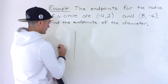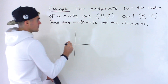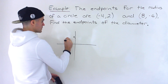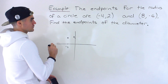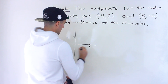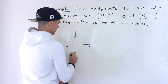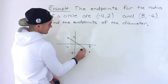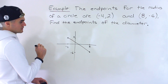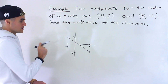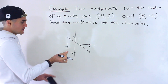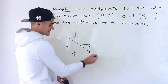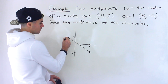Let me show you what's happening visually. So negative 4 and 2 is here, and here's the other endpoint of the radius at 8 and negative 6. This represents the radius of the circle. The reason why there's going to be two solutions is because the center of the circle can either be at one end or the other.